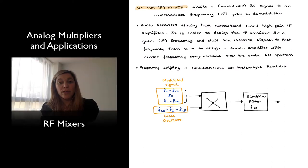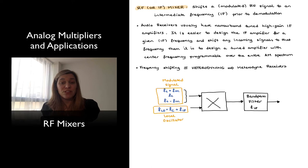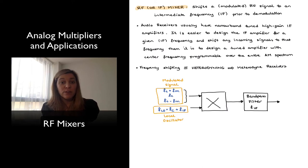In this video we are going to talk about another application of analog multipliers, and that is as RF mixers — radio frequency mixers, also referred to as IF mixers, IF standing for Intermediate Frequency. A mixer is essentially a frequency shifter. The purpose of an RF mixer is to take a modulated radio frequency signal and shift it down to an intermediate frequency.